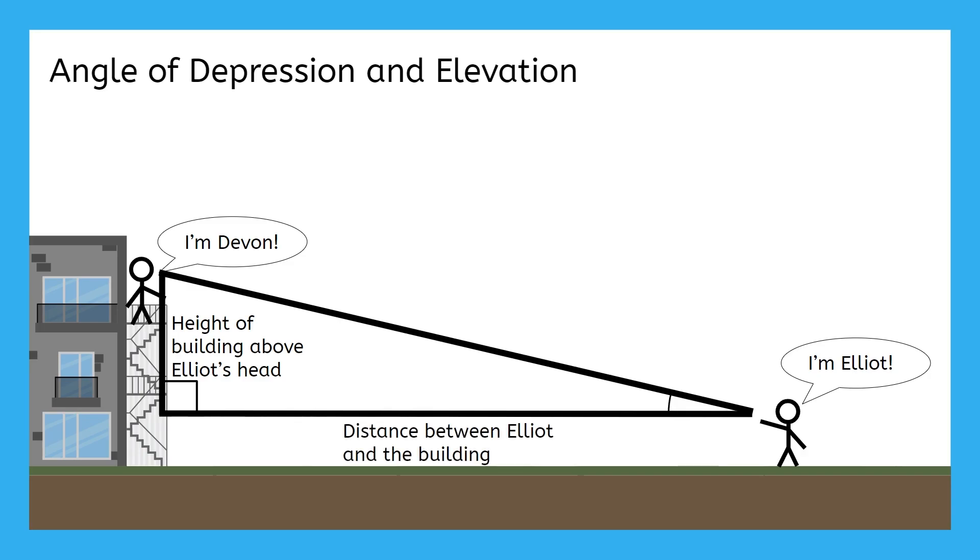As you learned in your solving triangles lesson, if you have a right triangle, you just need two other known values within your triangle to be able to solve for any unknown.